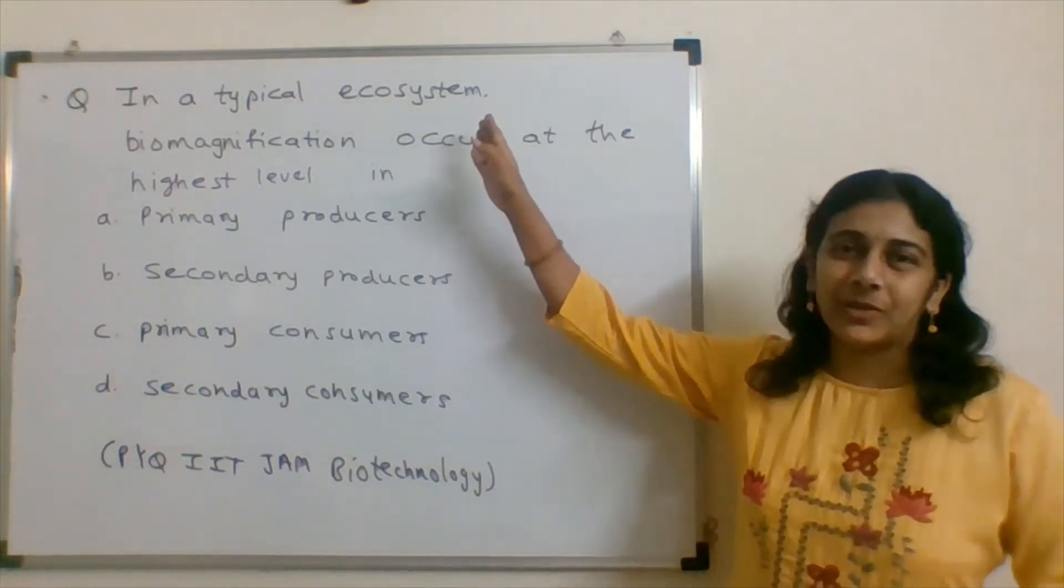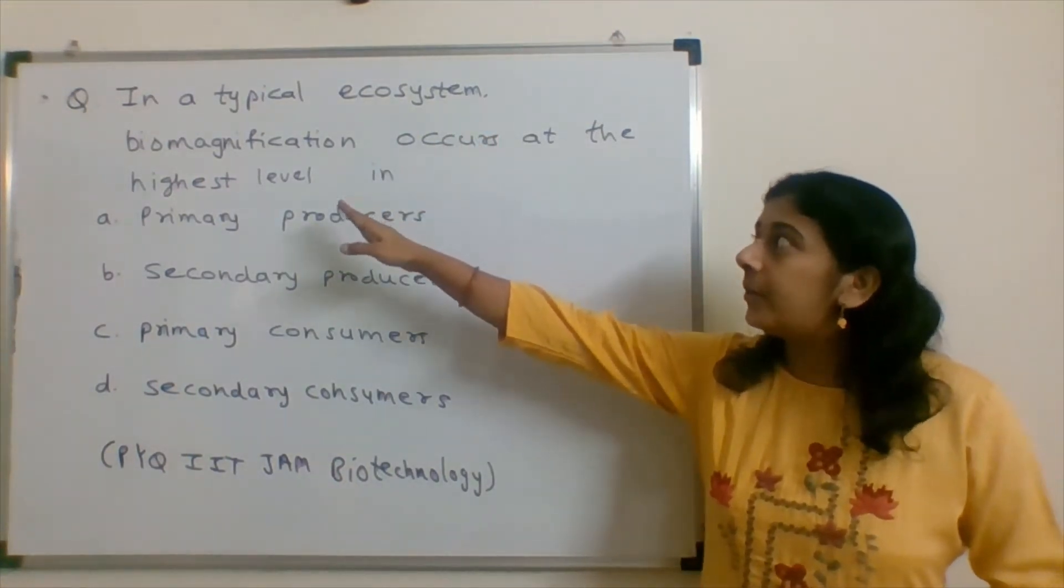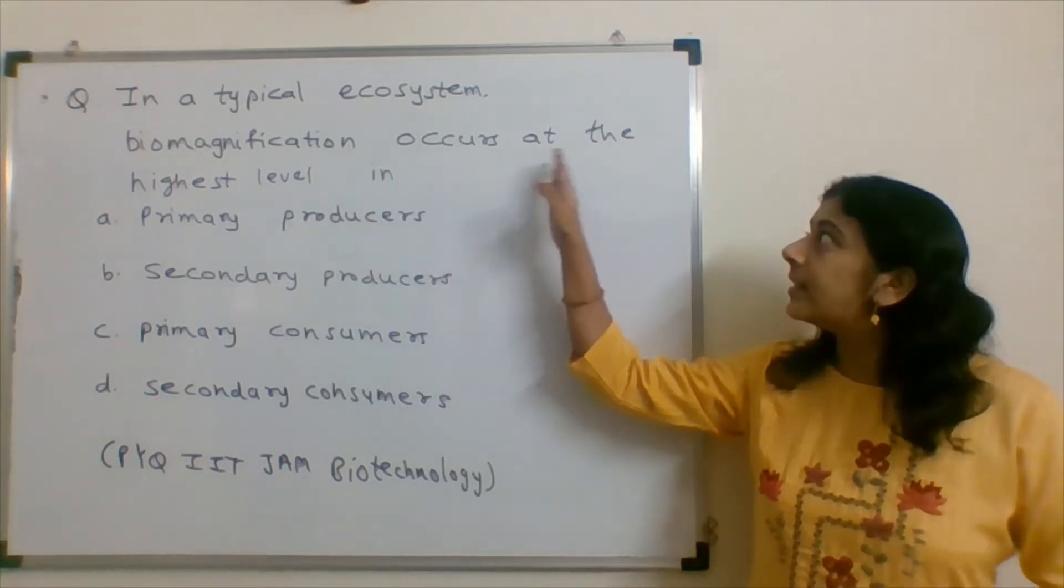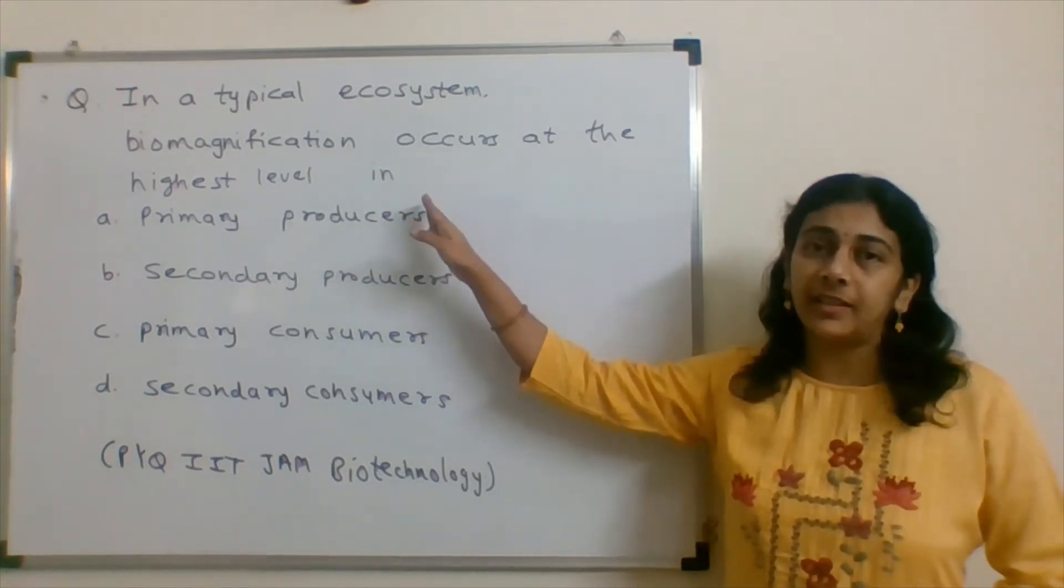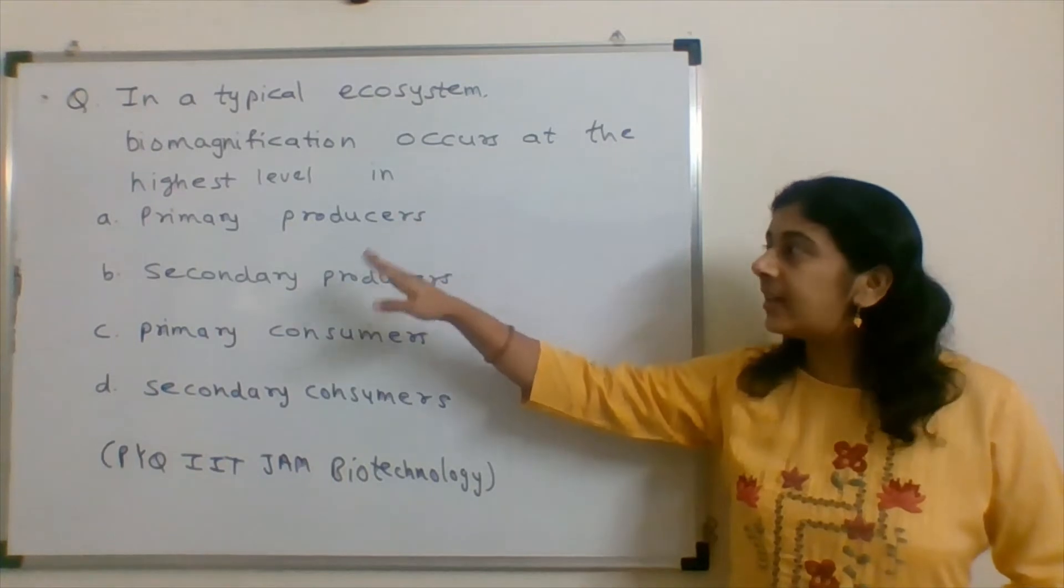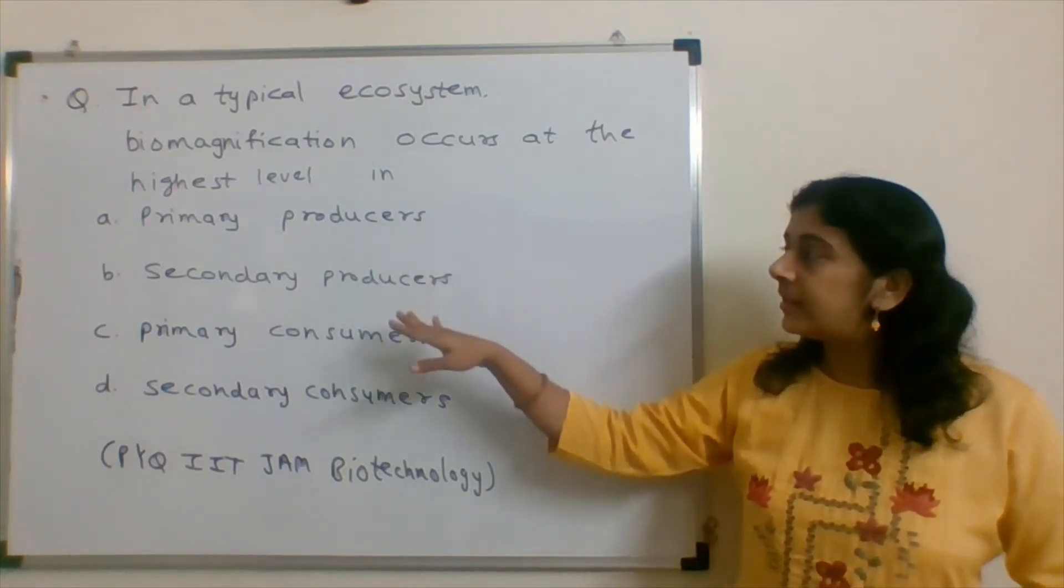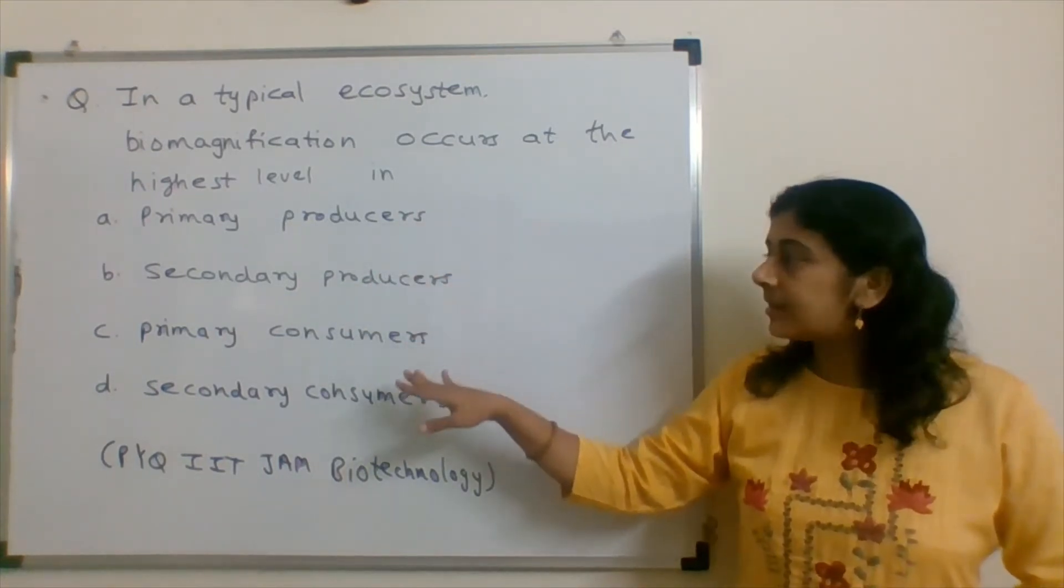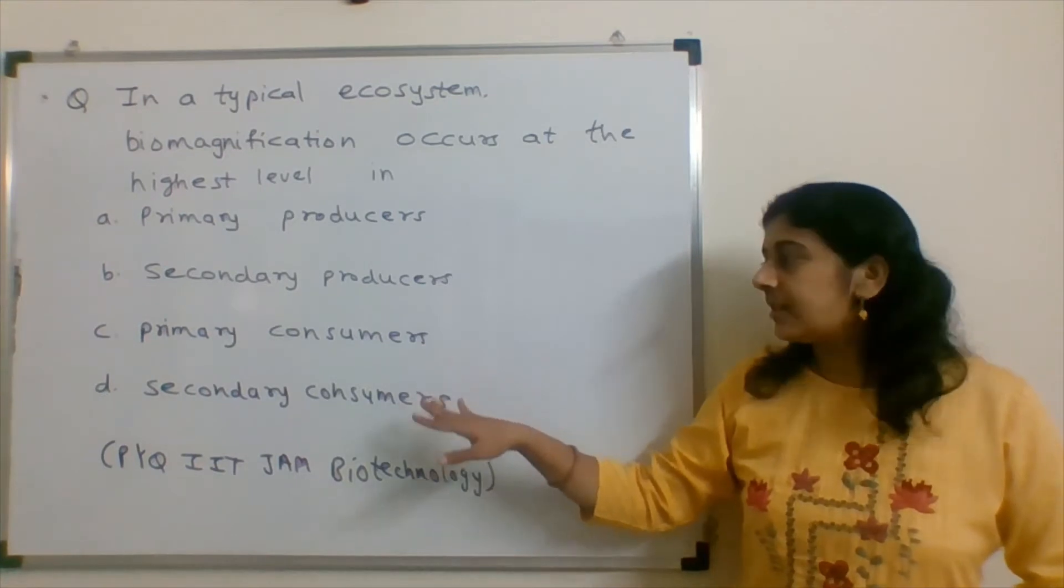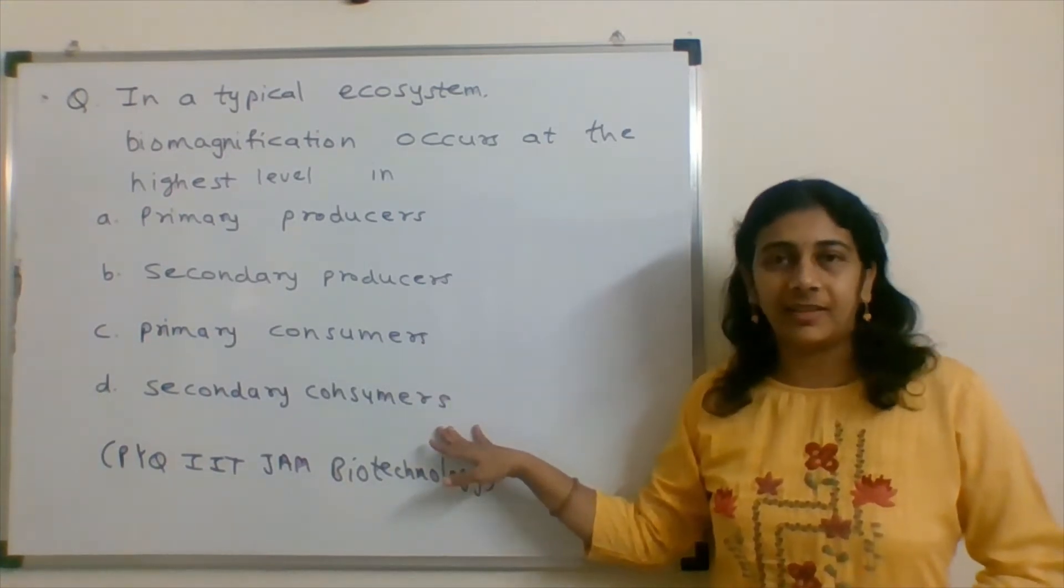In a typical ecosystem, biomagnification occurs at the highest level in: options are primary producers, secondary producers, primary consumers, or the answer may be secondary consumers.